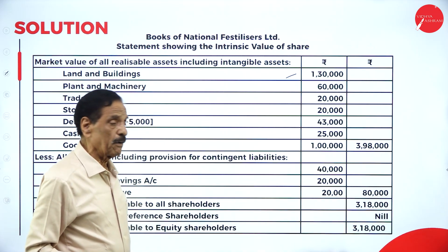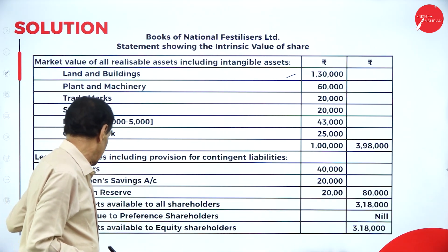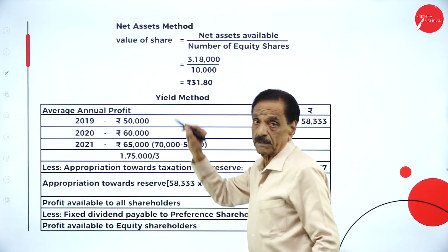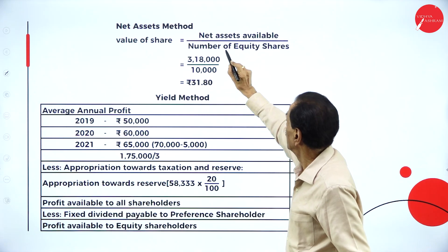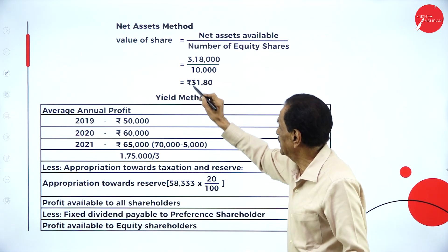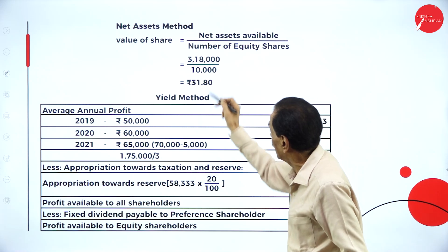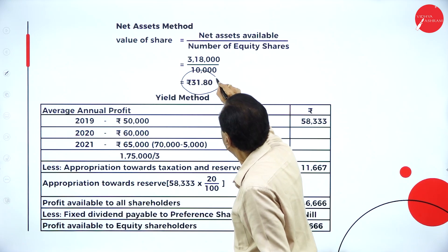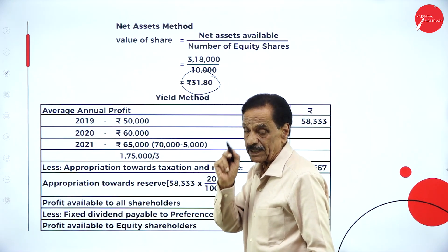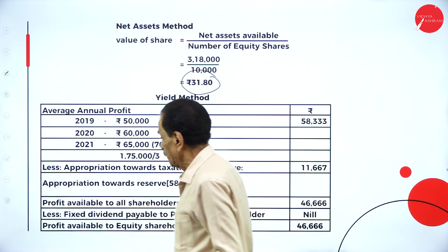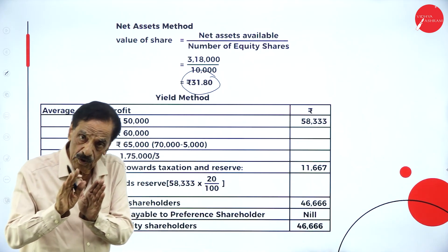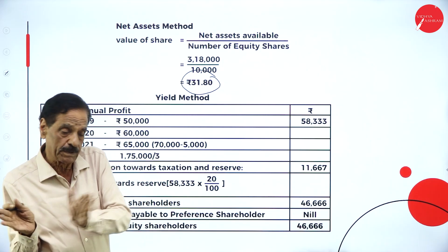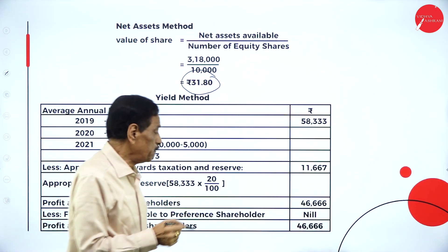There is no preference share capital, so all the net assets go in favor of equity shareholders. Net asset method valuation: net assets available divided by number of shares equals three lakh eighteen thousand divided by ten thousand, which works out to rupees 31.80 per share under the net asset method.